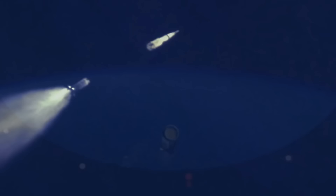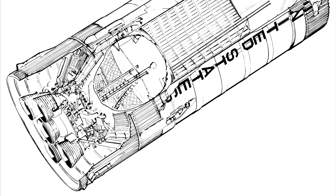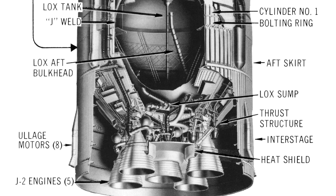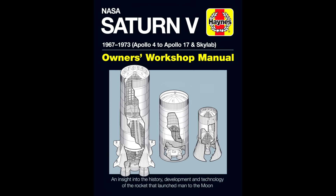I think the reason why these separated separately was because they have the ullage thrusters in there — stage separation thrusters that push the upper stage forward to provide continuous thrust while the engines ignite, because they need head pressure to have the fuel sitting at the bottom. Once those engines are fired, they're like solid motors in there, and those would get jettisoned because you don't want to carry that mass all the way to orbit. If you like questions like this, there is a fantastic Haynes manual — the owner's manual for the Saturn V — I've got it up there, highly recommend reading it.